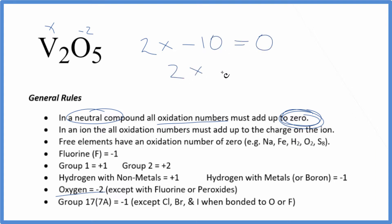So two X will equal ten. Divide both sides by two. X is going to equal a positive five. So the oxidation number on each one of these vanadiums here, that's going to be a positive five.